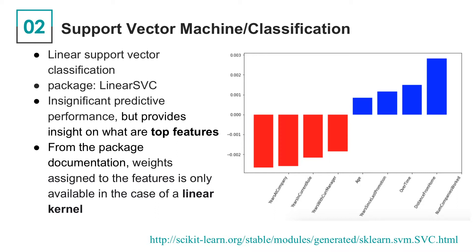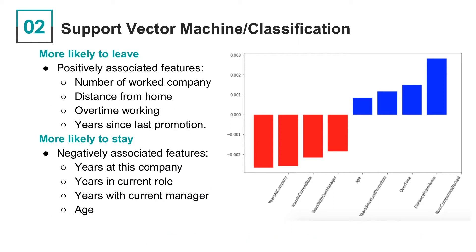We assume the higher the absolute value of the weight, the greater its association with attrition. Here, we drew the plot of the four most positive and negative associated features. From the plot, we can see that workers who keep changing companies, live far from home, work overtime, and haven't been promoted for a long time are more likely to leave. On the other hand, employees who have stayed long in their current role and with their current manager, and who are older, are more likely to stay. This could give some insights on how to build employee loyalty.